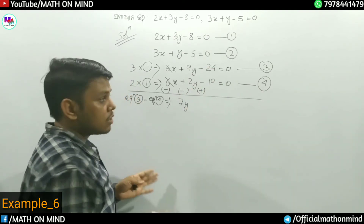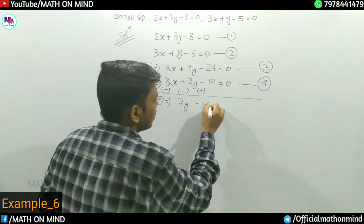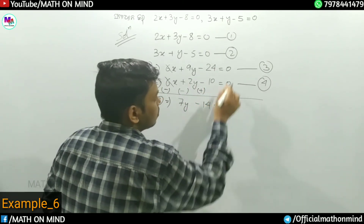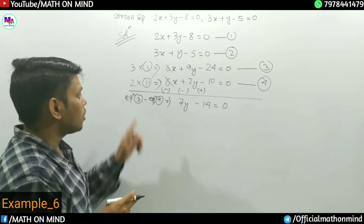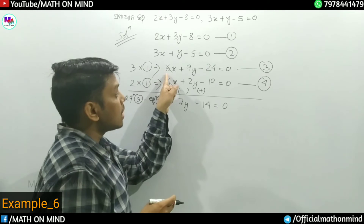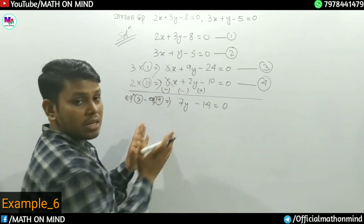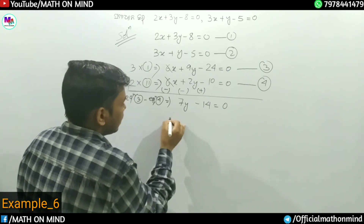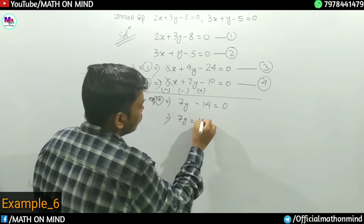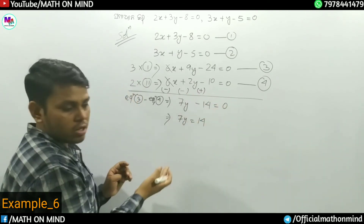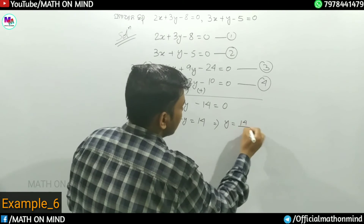Minus 24 plus 10 equals minus 14, is equal to zero. 7y is equal to 14. Minus 14 — let me call it for you — now y is equal to 14 by 7.